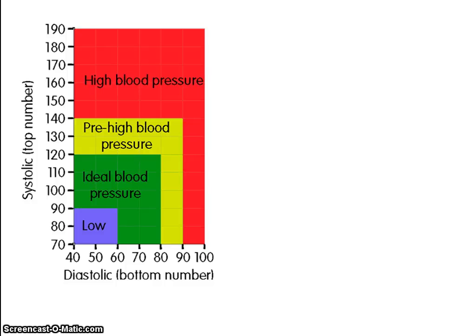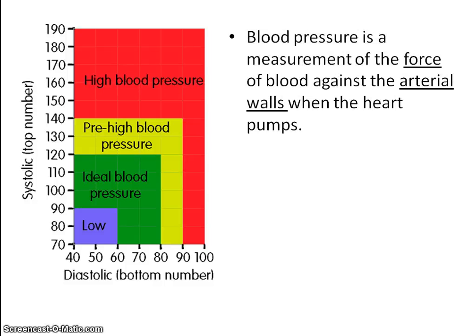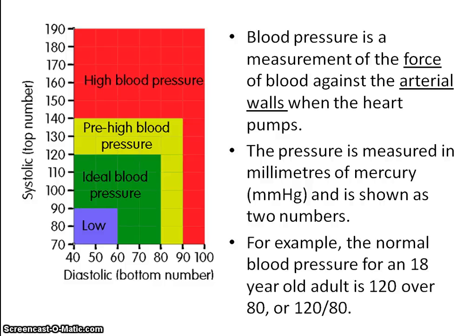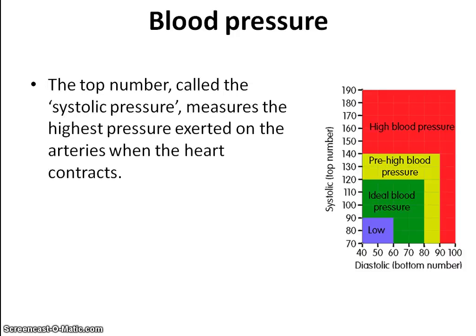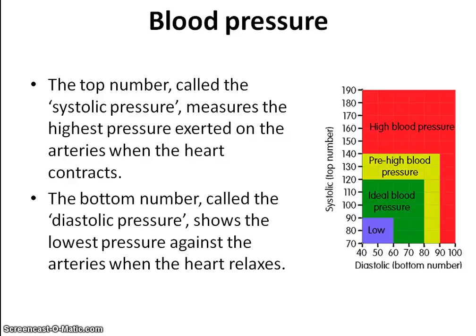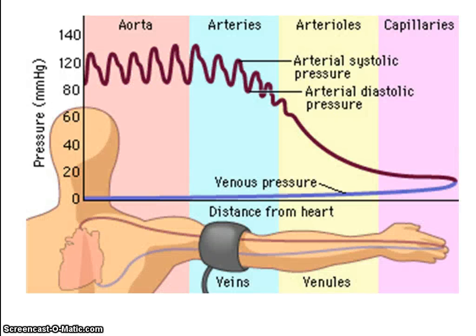A useful diagram shows healthy blood pressure values measured against the arterial walls in millimetres of mercury. The two numbers you come across are 120 over 80 for an 18-year-old adult. The top number is the systolic pressure — the contraction pressure on the arteries. The bottom number is the diastolic pressure on the arteries — when the heart relaxes. That measurement is taken in the upper arm arteries.